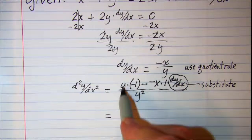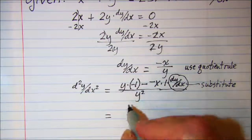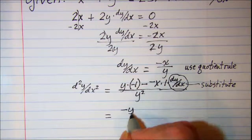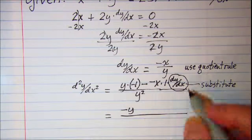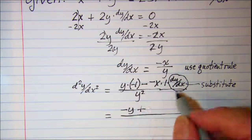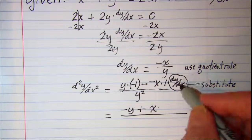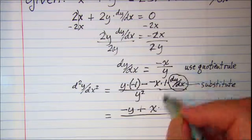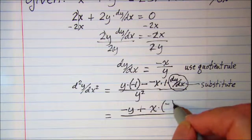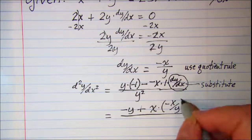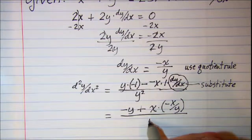My first term y times negative 1 is a negative y and then these two minuses are a plus and then x times, and then in place of dy/dx I'll put in negative x over y and in the bottom I have a y squared.